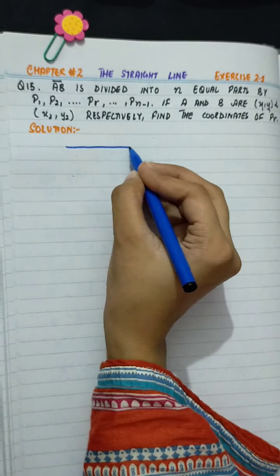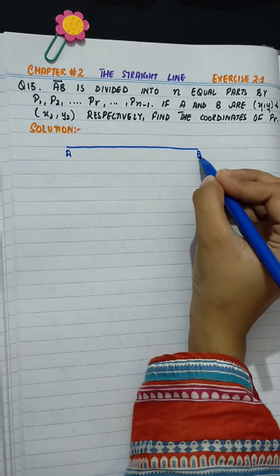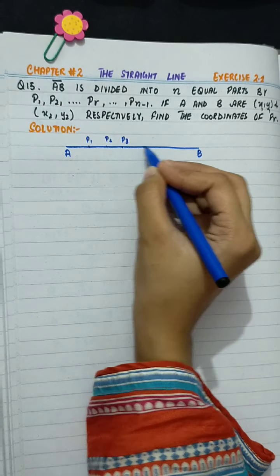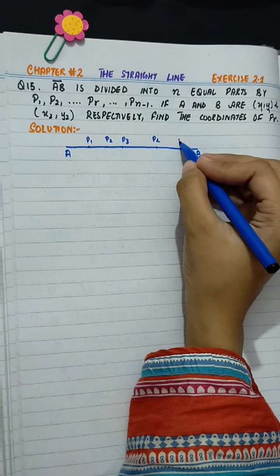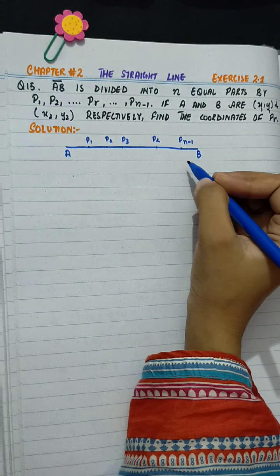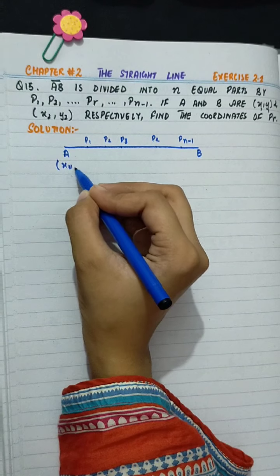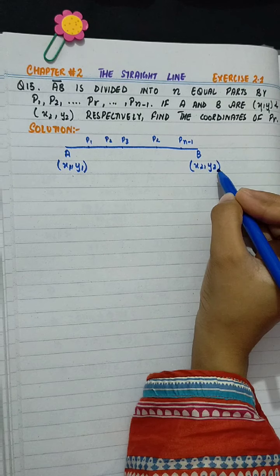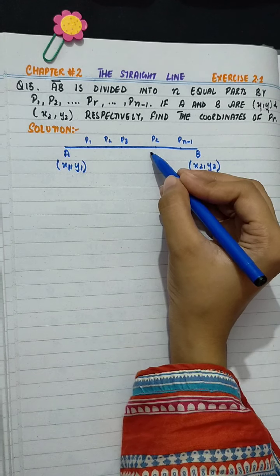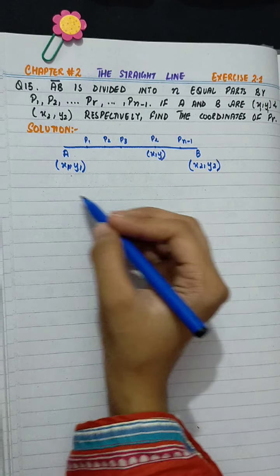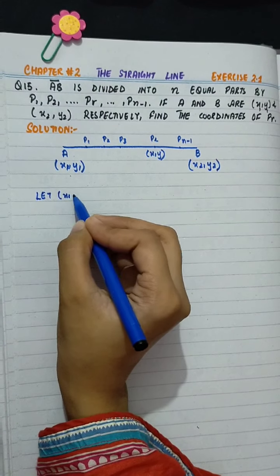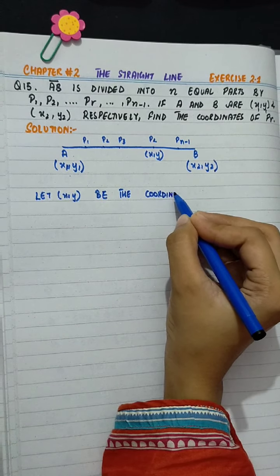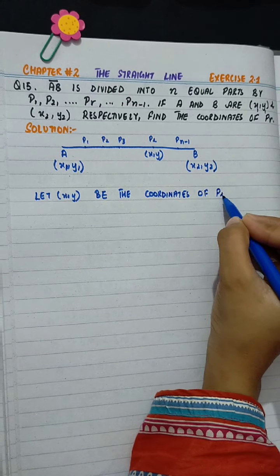We have one line A and B. This is P1, P2, P3 till PR is divided and then Pn-1. A coordinates given in my past X1, Y1 and B coordinates given in X2, Y2. Let us find coordinates for PR. Let X, Y be the coordinates of PR.